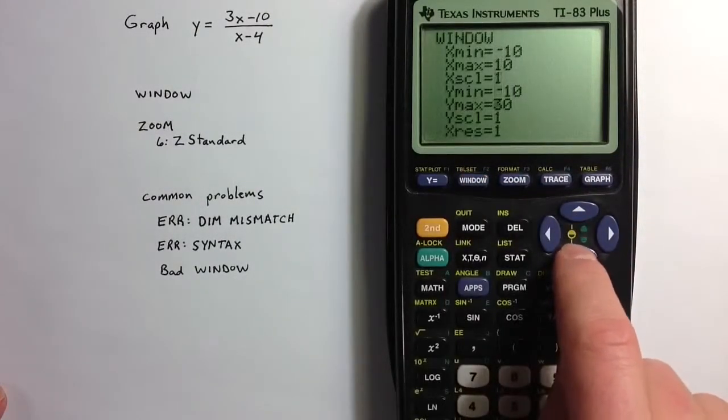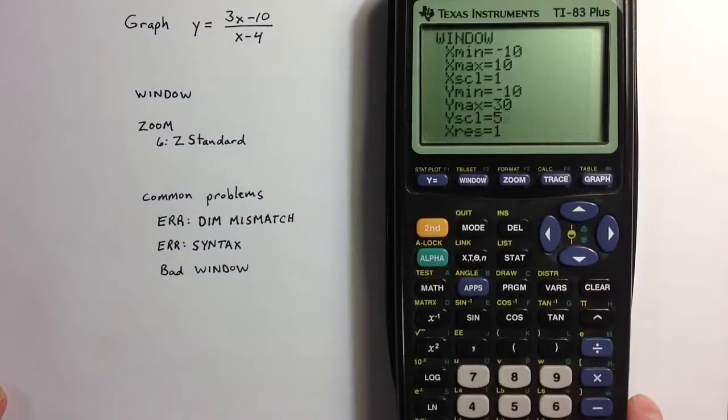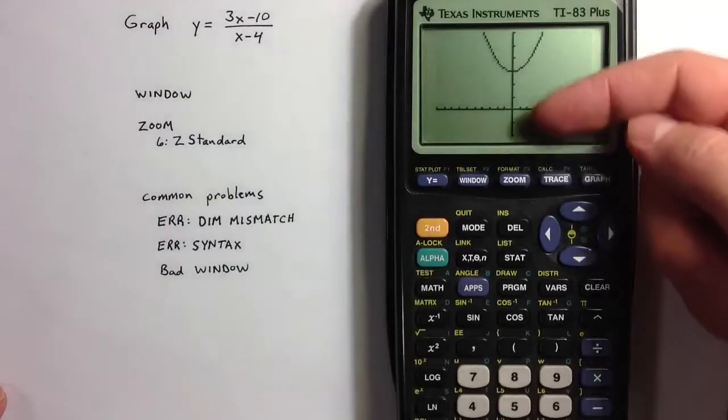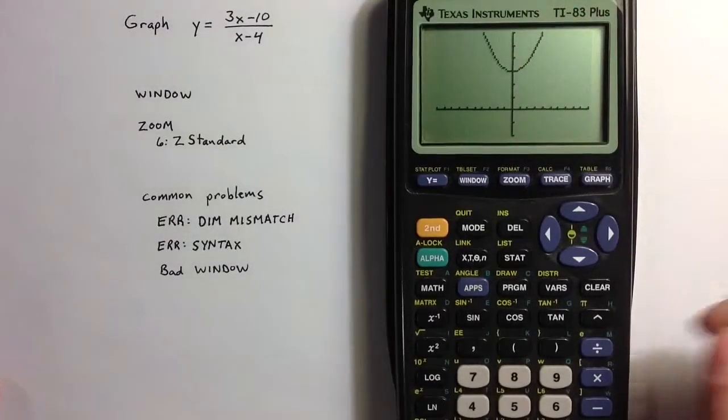When you do adjust the window like that, it is sometimes nice to adjust the scale as well. Maybe we can count by 5s instead of 1s so that the y axis isn't quite as crowded.